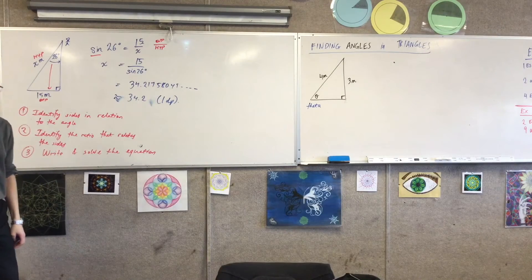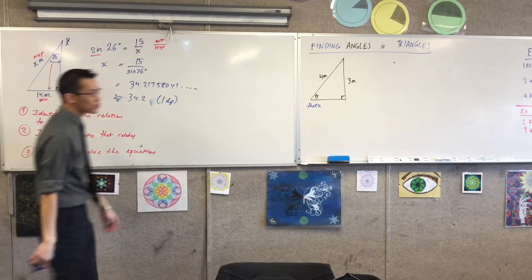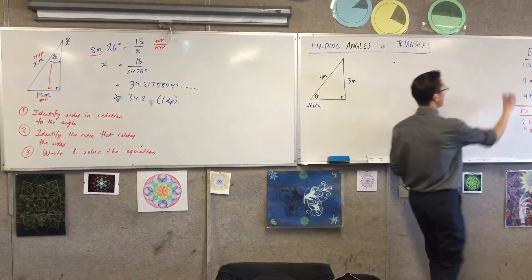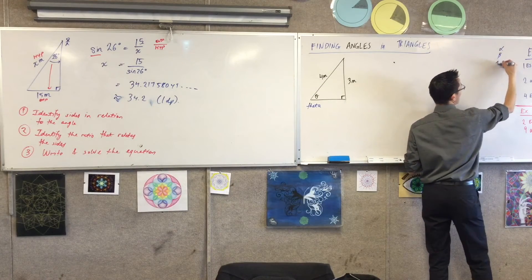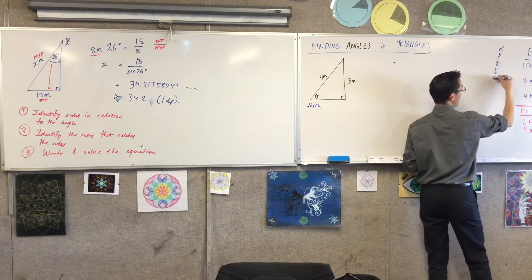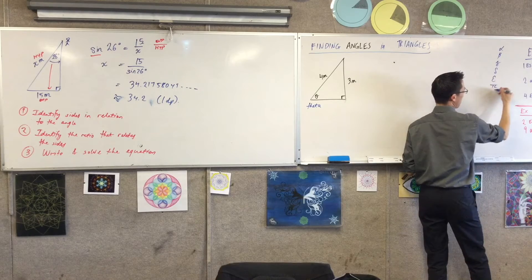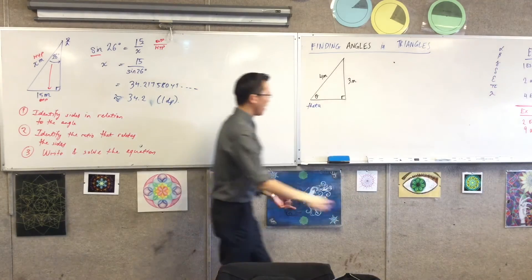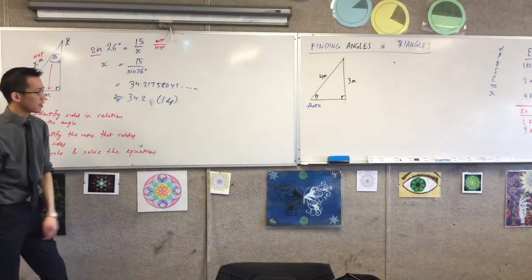By convention, we use Greek letters for a lot of our angles. So you'll see the other ones that are common are alpha, beta, gamma, delta, epsilon, you guys have already seen pi before. There's a few other ones. Theta is the most common one by far.